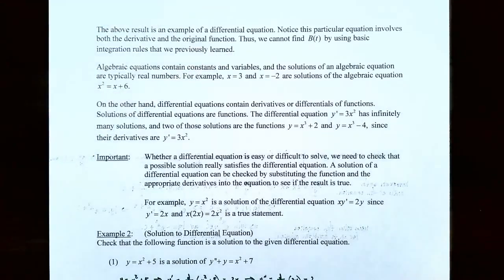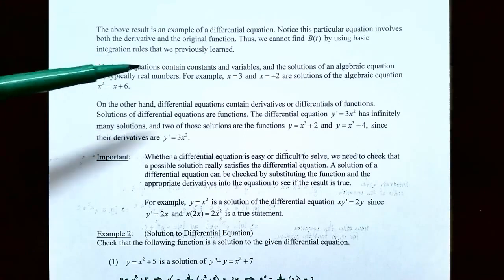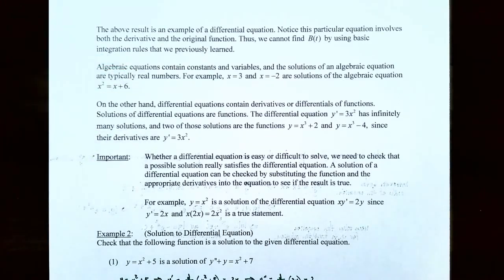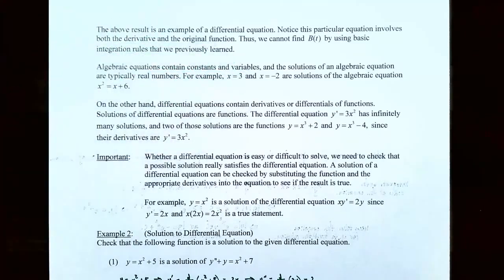Notice that the last example involves both the derivative and the original function — it had B prime of T but also capital B of T. However, we cannot find capital B of T using basic integration rules from the previous sections. One of the first things we'll talk about is the difference between solutions to differential equations versus solutions to algebraic equations. Algebraic equations contain constants and variables, and their solutions are real numbers — for example, x equals 3 and x equals negative 2 are solutions to x squared equals x plus 6.